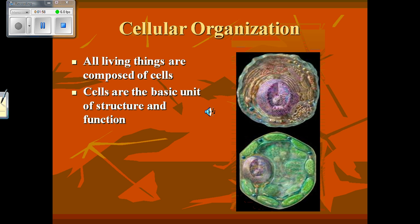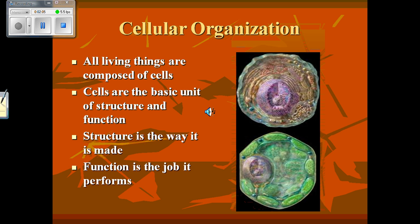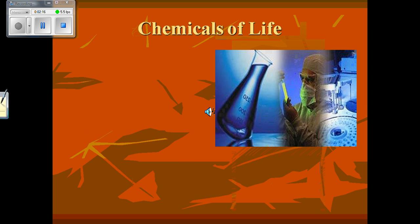Cells are considered the basic unit of structure and function — they're the basic part of a living thing and everything builds off of a cell. Structure is the way something is made; function is the job it performs. We will get into those a little bit later in our notes.